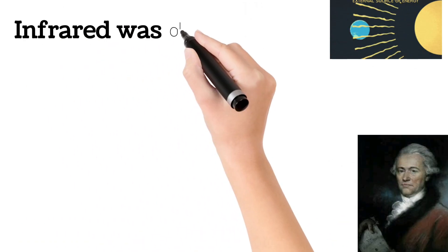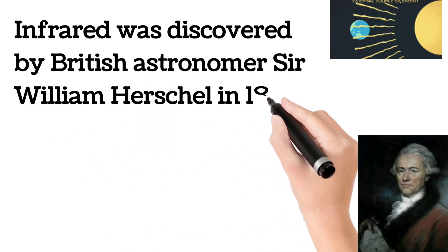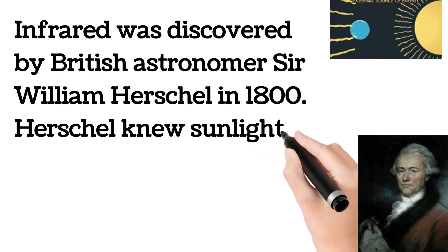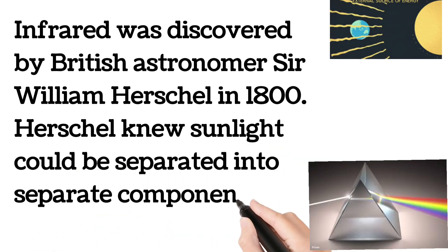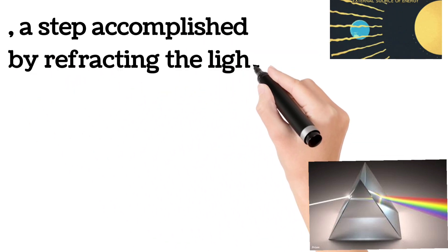Infrared was discovered by British astronomer Sir William Herschel in 1800. Herschel knew sunlight could be separated into separate components, a step accomplished by refracting the light through a glass prism.